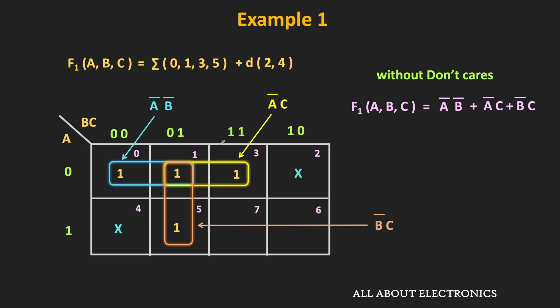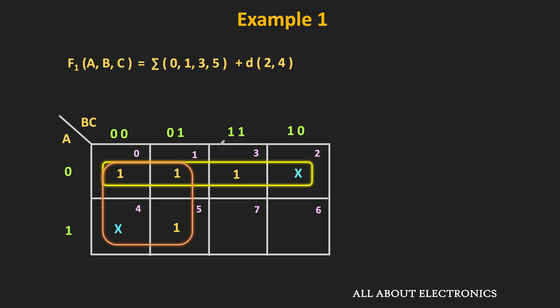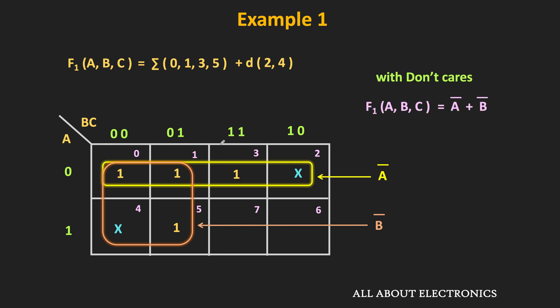But using the don't care terms, we can further simplify the boolean expression. If we use don't care minterm m2 and consider it as 1, then we can make the group of these four ones. Similarly, using the don't care minterm m4, we can make the group of these four ones. By making only two groups, we are able to cover all the ones. This group corresponds to B̅, while the group in yellow corresponds to A̅. So the overall minimized function is equal to A̅ + B̅.